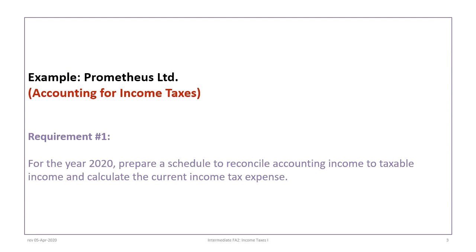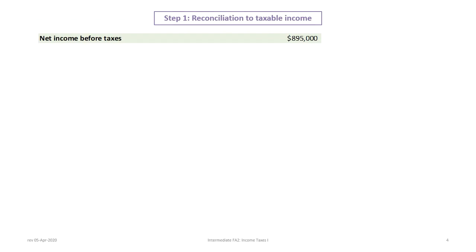This tutorial is based on the Prometheus Limited example. It's important that you have pre-read the information. Our first requirement for 2020 is to prepare a schedule to reconcile accounting income to taxable income and calculate the current income tax expense. We'll begin with the reconciliation to taxable income, starting by focusing on permanent differences.